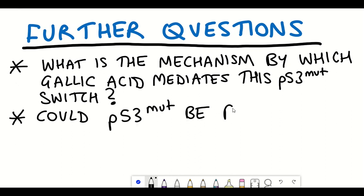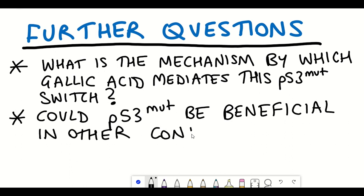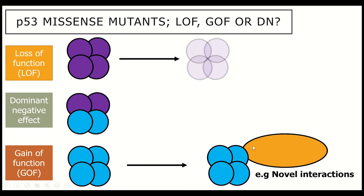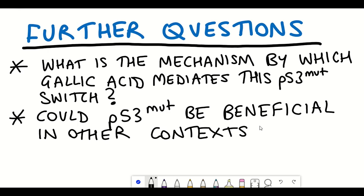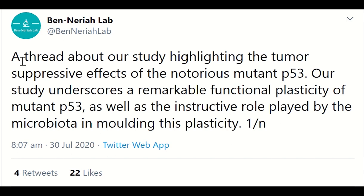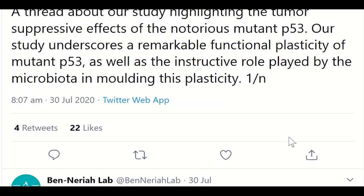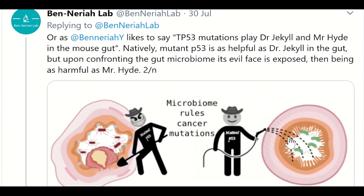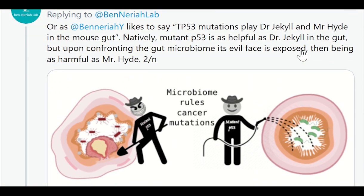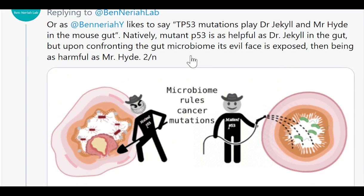Secondly, how does it impact our view of what mutant p53 is doing in cells? Initially, mutant p53 has been viewed as loss of function or gain of function in terms of gaining oncogenic properties that drive tumorigenesis. This study seems to show that mutant p53 could actually be beneficial in certain contexts. The lab even has an entertaining image in their Twitter thread showing a Dr. Jekyll and Mr. Hyde analogy for the two different versions of mutant p53.